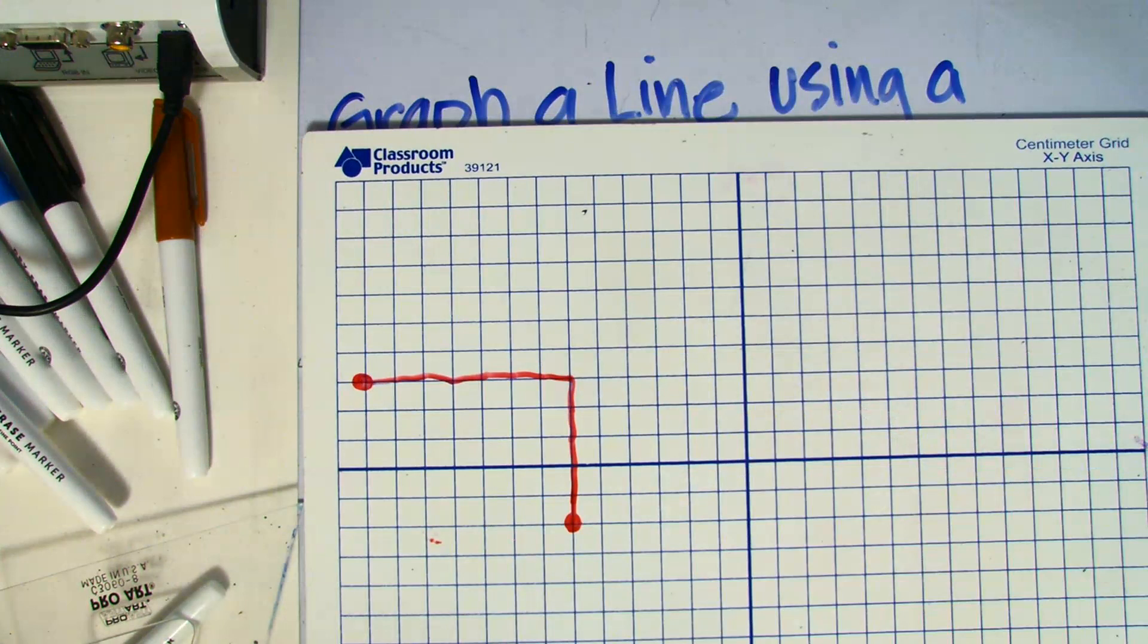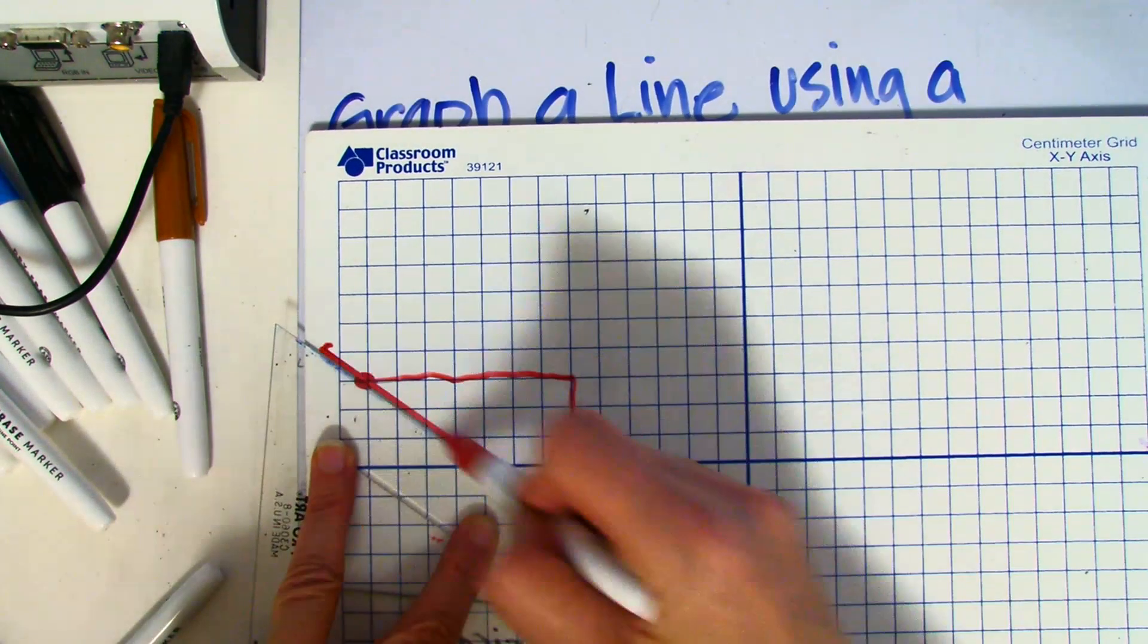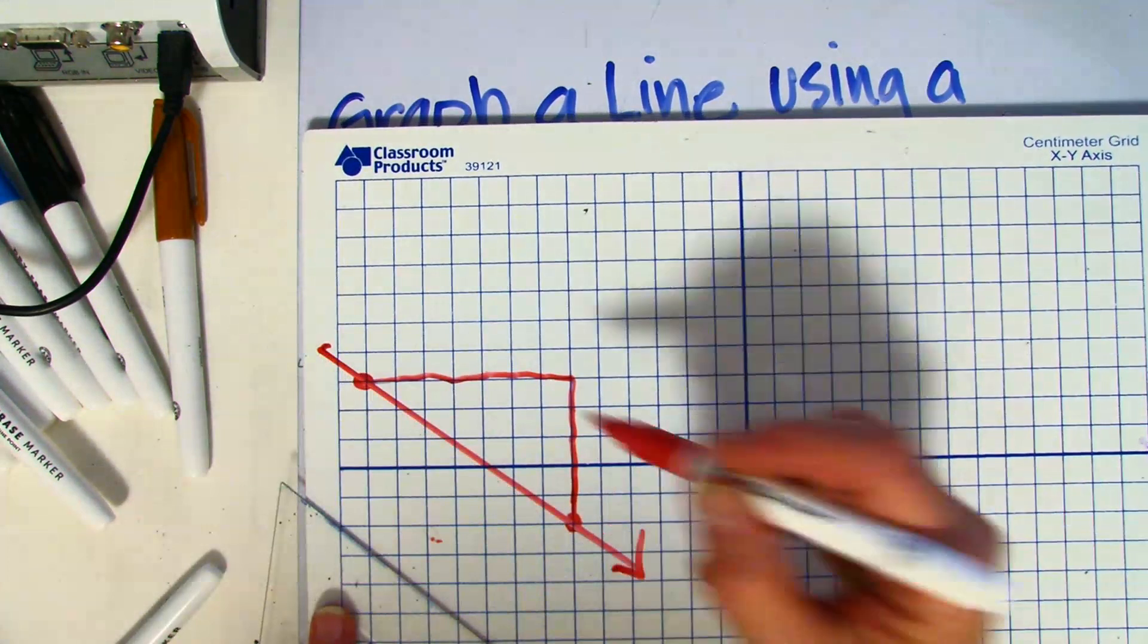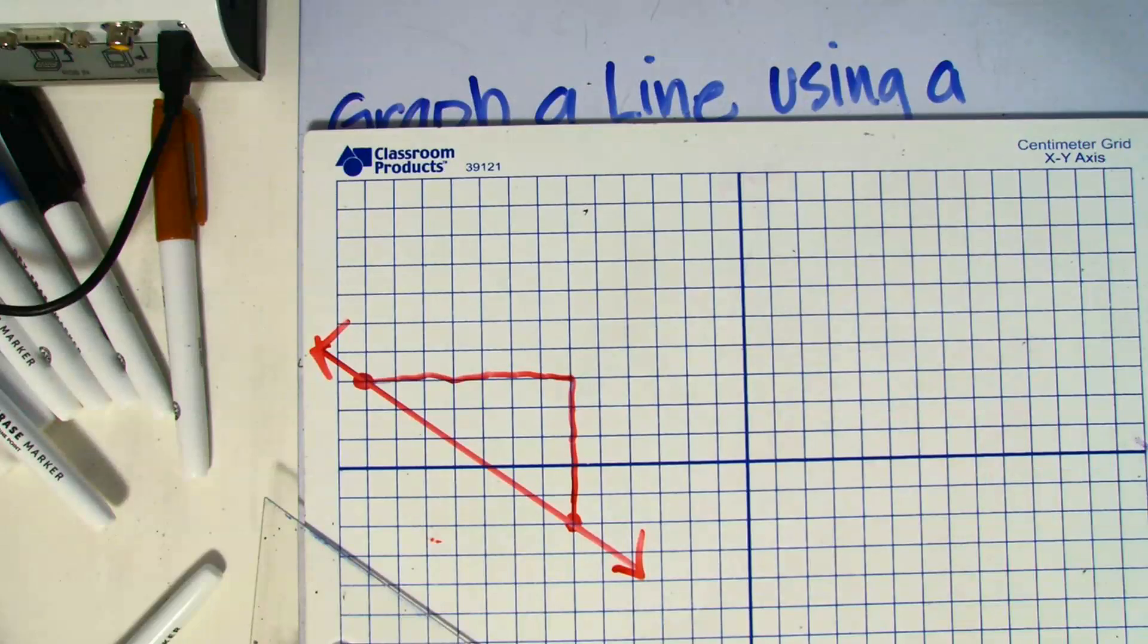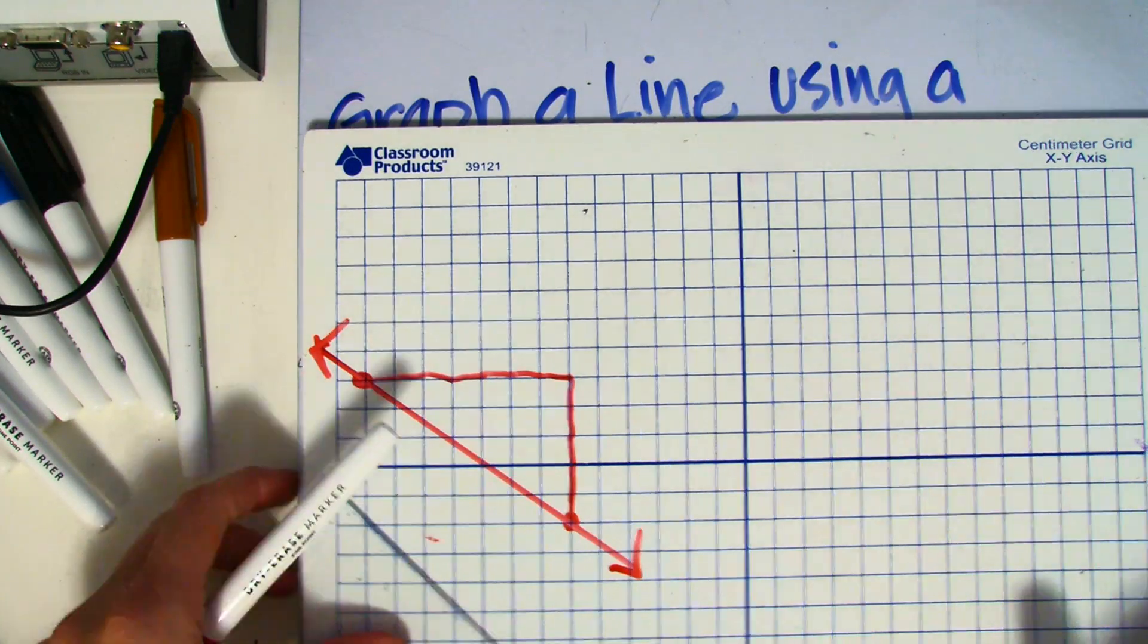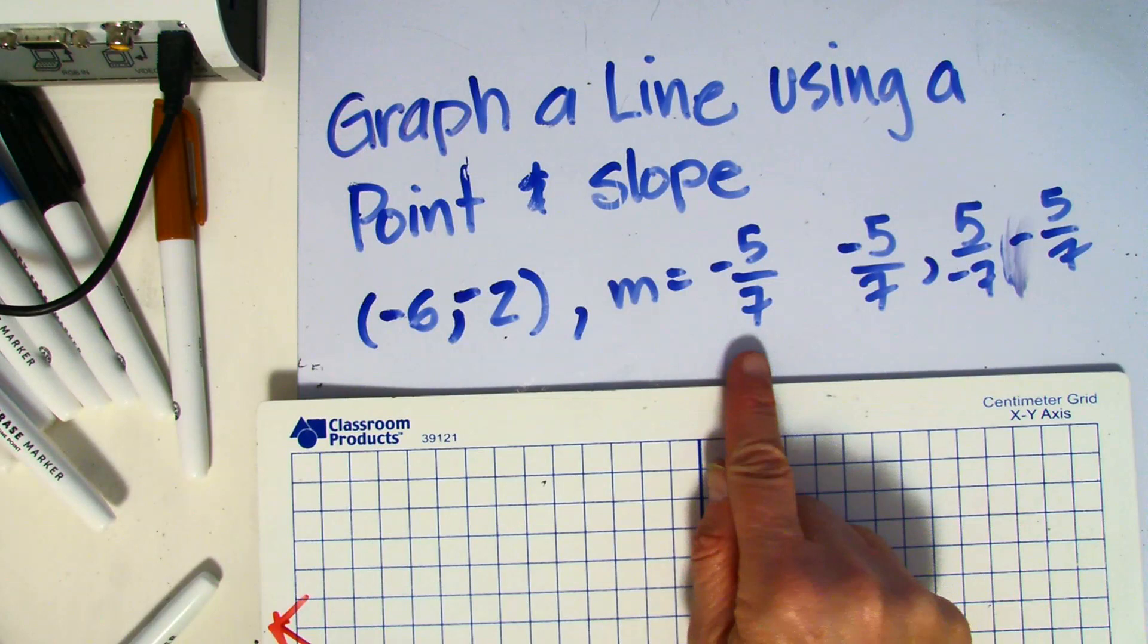I've got another point, and now I'm going to connect those points using my straight edge, and I've created a line. And again, notice this line is decreasing, and you can tell it was going to be decreasing because the slope is a negative number.